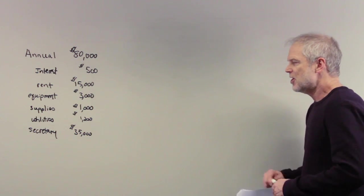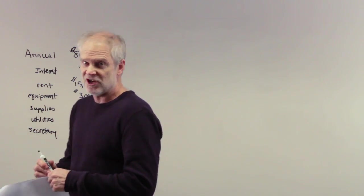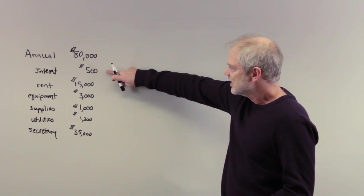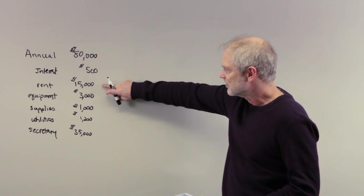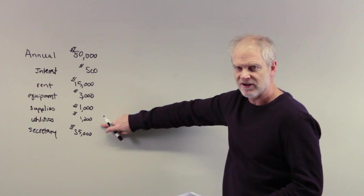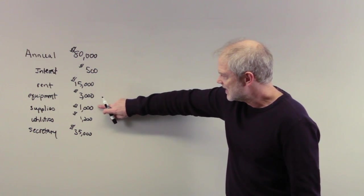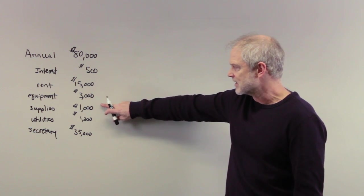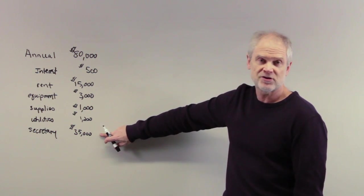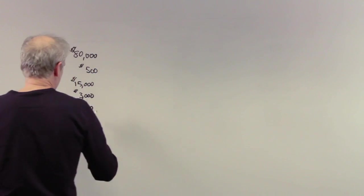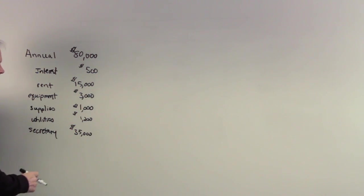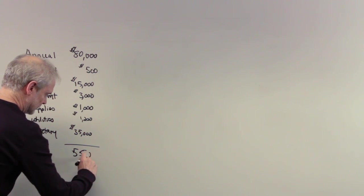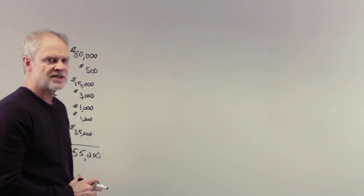So what are her accounting costs? Well, the accounting costs are really money that she has to outlay. Literally, physically cash outlays. As we look at this list, this was the salary she was earning before. This is the interest she was making on her CD. This is the rent, equipment, supplies, utilities, secretary. In terms of cash outlays, these are the only things that the accountant would worry about. You shelled out $15,000 for rent, $3,000, $1,000 for various kinds of utilities and supplies, and you paid your secretary $35,000. If I add those up, I've got $55,200.